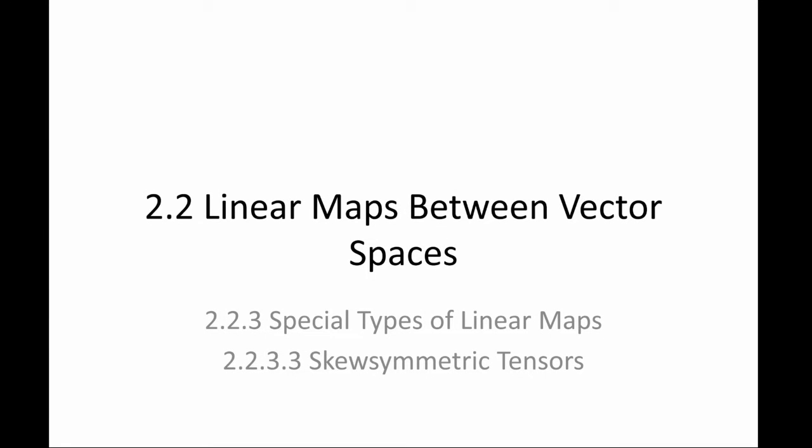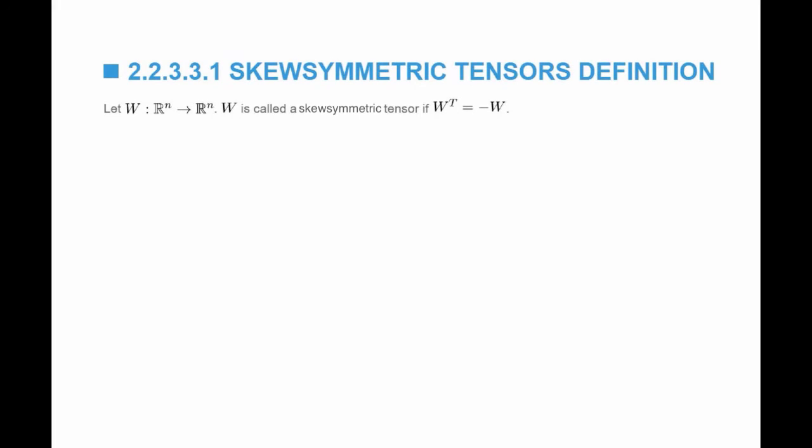The last special type of linear maps that we are going to study is the skew-symmetric tensors. A skew-symmetric tensor is defined as the tensor whose transpose is equal to its negative. So W transpose is equal to negative W.